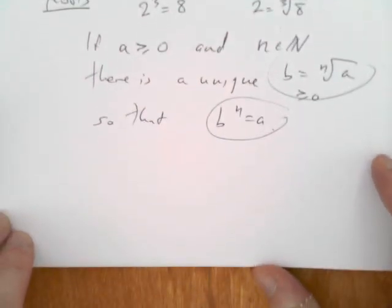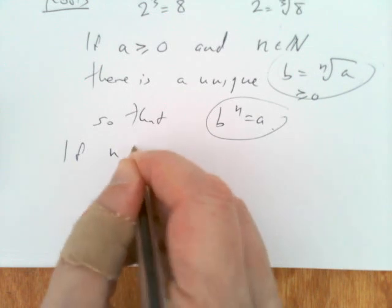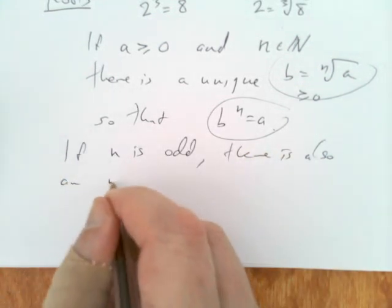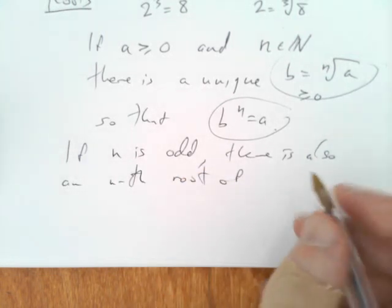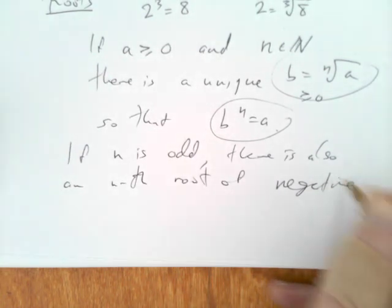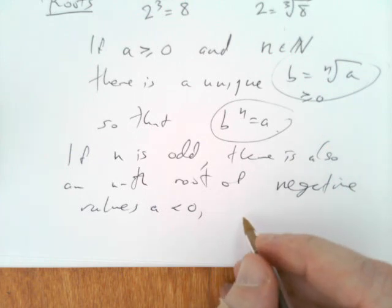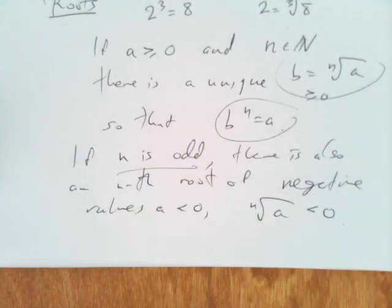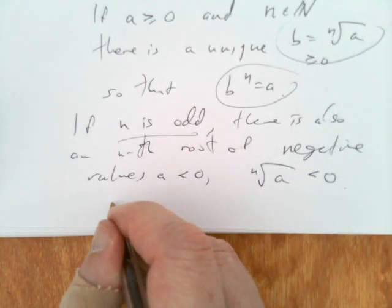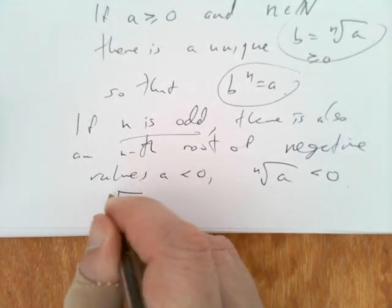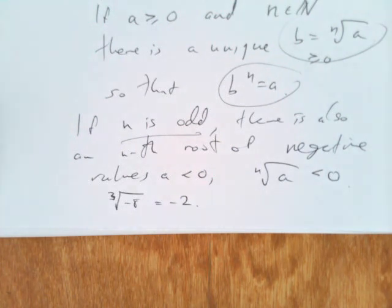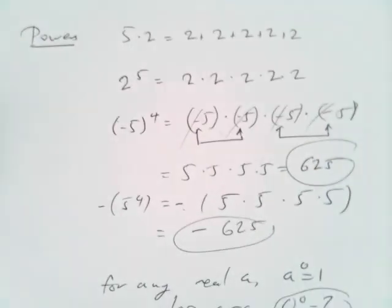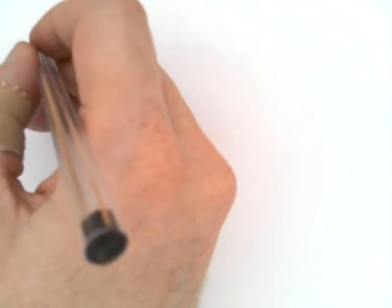We have to be a bit careful about other values — positives, negatives. If n is odd, we can do a little bit better: there is also an nth root of negative values, so the nth root of a is defined even when a is less than zero. But it doesn't work if n is even — that's very subtle and tricky. For example, the cube root of minus eight turns out to be minus two. So there are cube roots for negative numbers as well, but there aren't square roots of negative numbers among the real numbers.